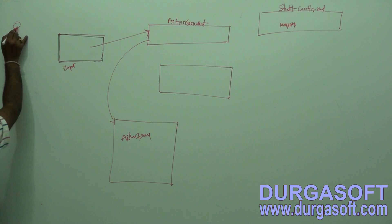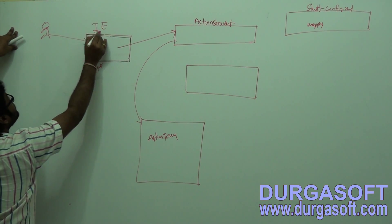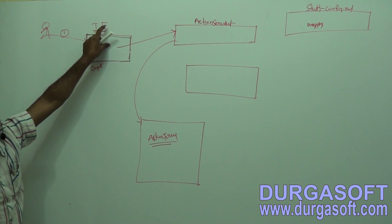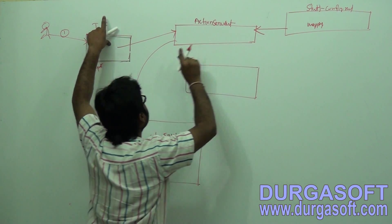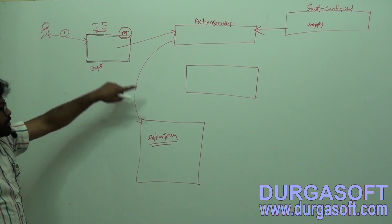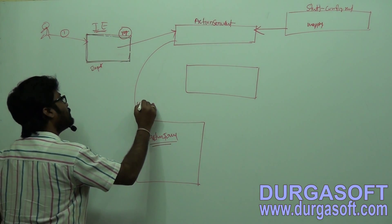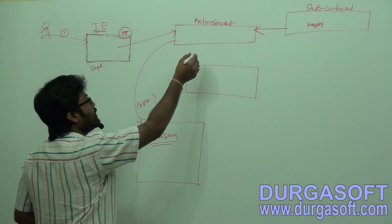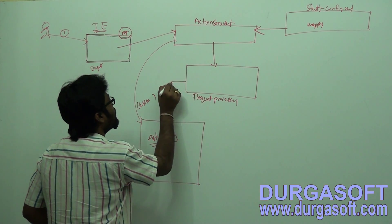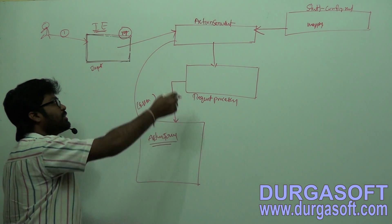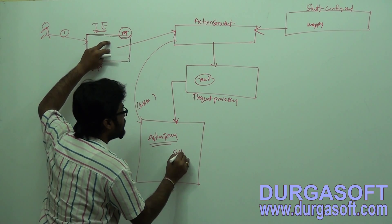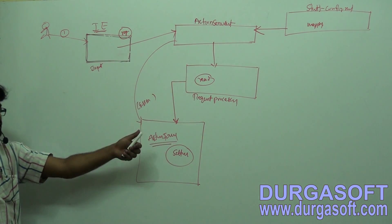Whenever a user submits their first request from the browser, at first time request it will create one ActionForm bean object. After creation of your ActionForm bean object, based on these mappings - let's say if it is action registration - by reading your XML file mappings data, it will create one form bean object and store that object into session scope. Then it will send request to the helper class called RequestProcessor. RequestProcessor will read data from your form and store it into the actual bean object created by ActionServlet, calling your bean class setter methods.